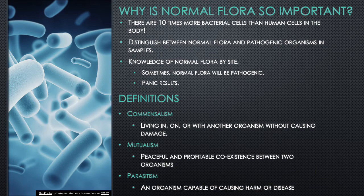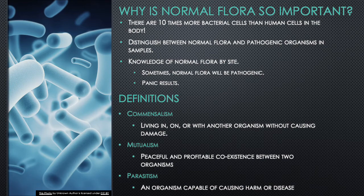Let's look at some definitions. Commensalism is when an organism lives in, on, or with another without causing it damage. Mutualism describes a peaceful and profitable coexistence between two organisms. Parasitism is defined by the ability of an organism to cause harm or disease in the host. Over time we discover how organisms vary in their role — sometimes commensal, sometimes mutualistic, and sometimes parasitic. It's all a very delicate ecosystem.